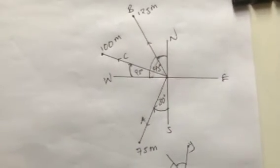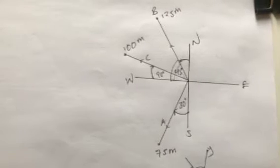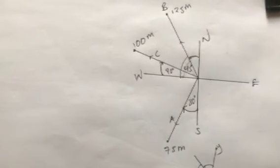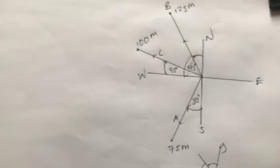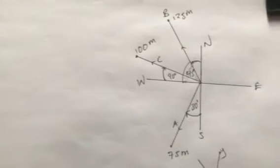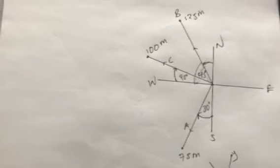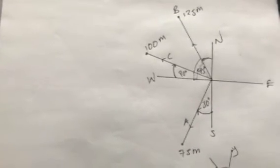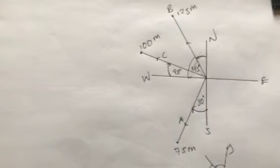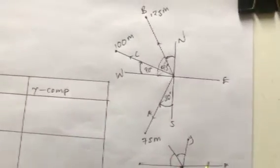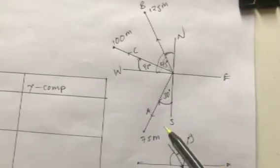Now I can solve this using the analytical method — that is, the table method — whereby I use the table to find the x and y components, then find the resultant magnitude. Moving from the positive x-axis anticlockwise gives the actual angles for each vector. These compass-based angles just show direction relative to each pole.